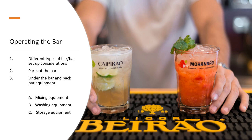Operating the bar covers three topics: one, different types of bar, bar setup and considerations; two, parts of bar; three, under the bar and back bar equipment. Under the bar or at the back, there are three categories: we have the mixing, washing, and storage equipment.